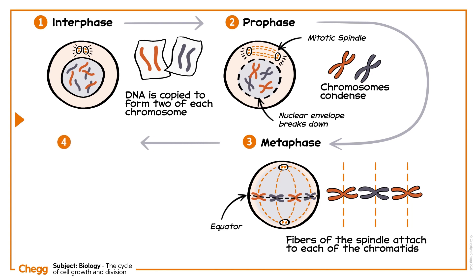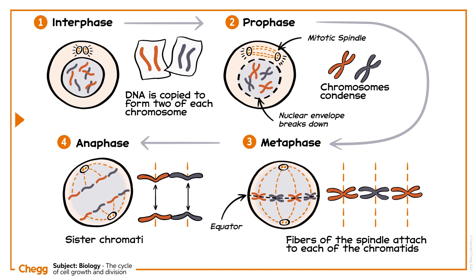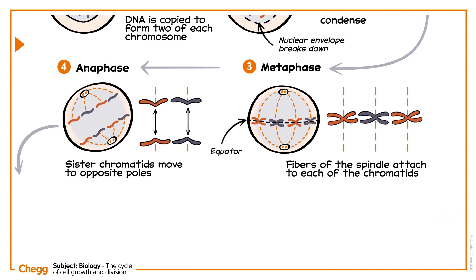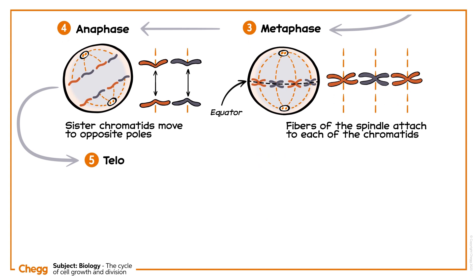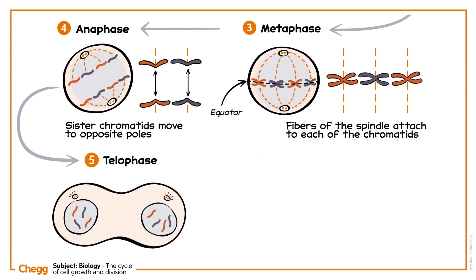Step 4: Anaphase. Sister chromatids of each chromosome are moved to opposite poles by spindle fibres. In the fifth step, telophase, the chromosomes having moved to opposite poles are decondensed, and the spindle fibres disappear.